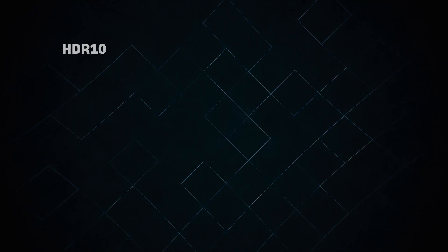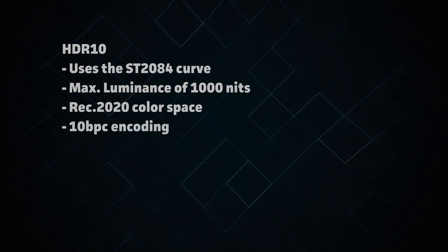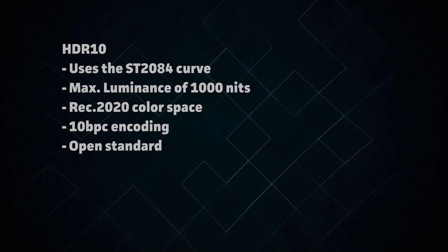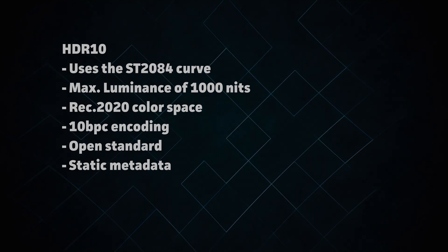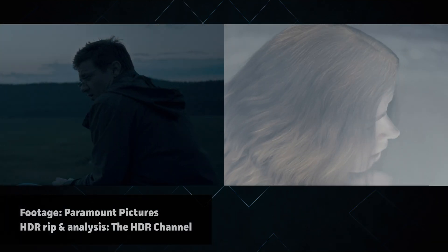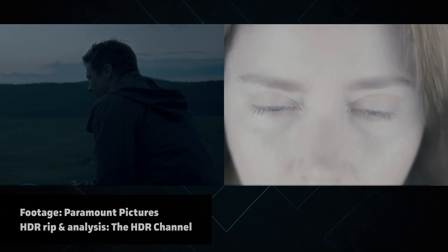Now let's talk about some of the differences between the different PQ formats. The most widely adopted PQ format is HDR10. It uses the ST2084 PQ curve, allows a maximum luminance of 1000 nits, and uses the REC 2020 color space with 10-bit per channel encoding. HDR10 is an open standard and it's the least demanding of the PQ formats. The main issue with HDR10, though, is that it only uses static metadata. The maximum peak and average brightness values are calculated across the entire video, instead of for each scene or each frame. So if your show is mostly dark but contains one really bright scene, that one scene is going to dictate how the rest of the show is processed by the display.